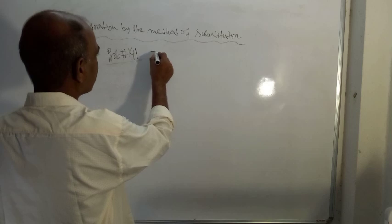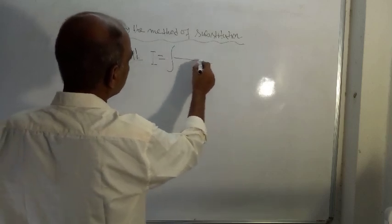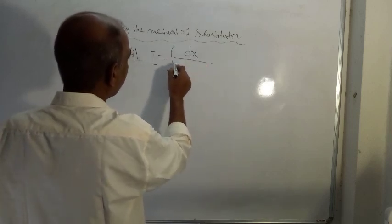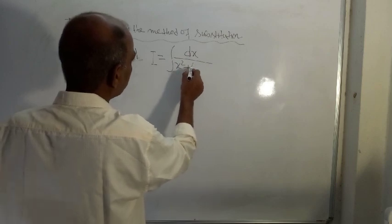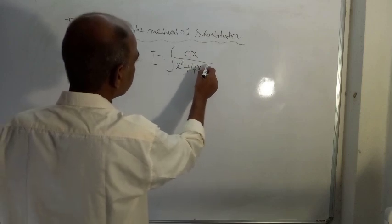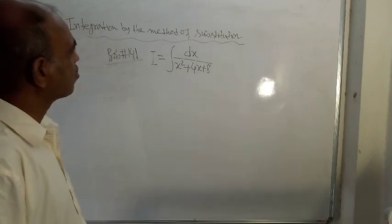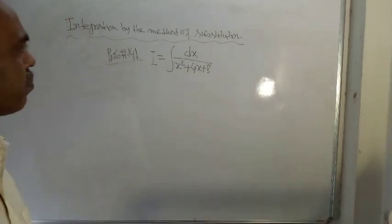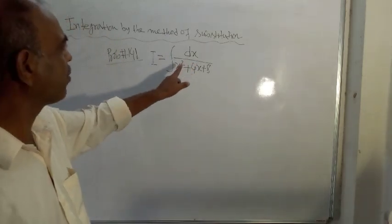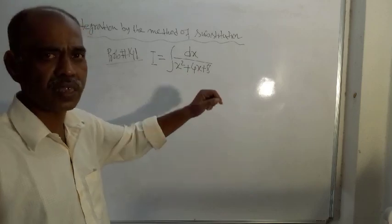Integration I, this is equal to integration of dx divided by x square plus 4x plus 8. So this is the given problem, integration of dx divided by x square plus 4x plus 8.